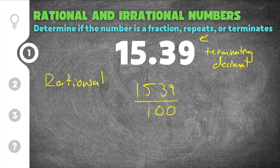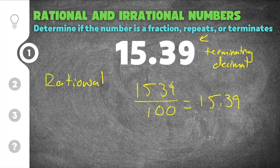And if you were to simplify this fraction, you would end up getting 15.39. And that's how I know this is a rational number and that's why all terminating decimals are rational numbers.